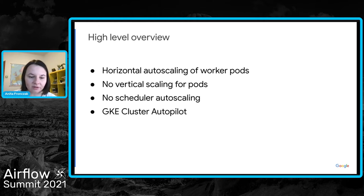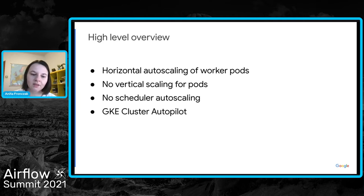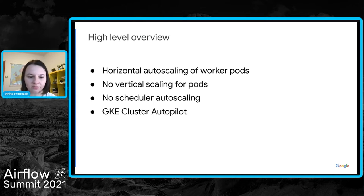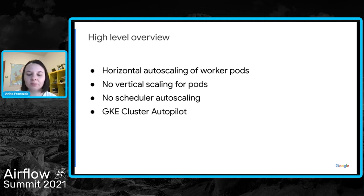We have not implemented auto scaling for the Airflow scheduler, but scheduler parameters like CPU, memory, and disk are separate from worker parameters and can also be changed after the environment has been created. To make this work we use GKE Cluster Autopilot — the user no longer manages Compute nodes, only Kubernetes pod requirements. GKE Cluster Autopilot changes the cost model from compute node-based to pod-based, so you pay for your chosen minimum number of workers when there is no load and for your maximum number of workers when there is load.